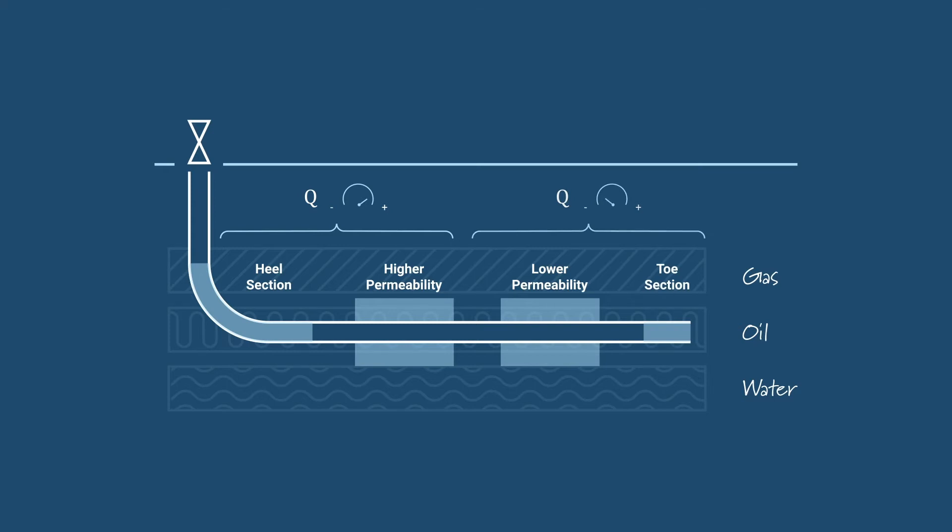This is because there is more resistance to fluid flow in the low permeability zone and because the differential pressure between the reservoir and the wellbore is lower at the toe section, each resulting in a decreased flow rate.